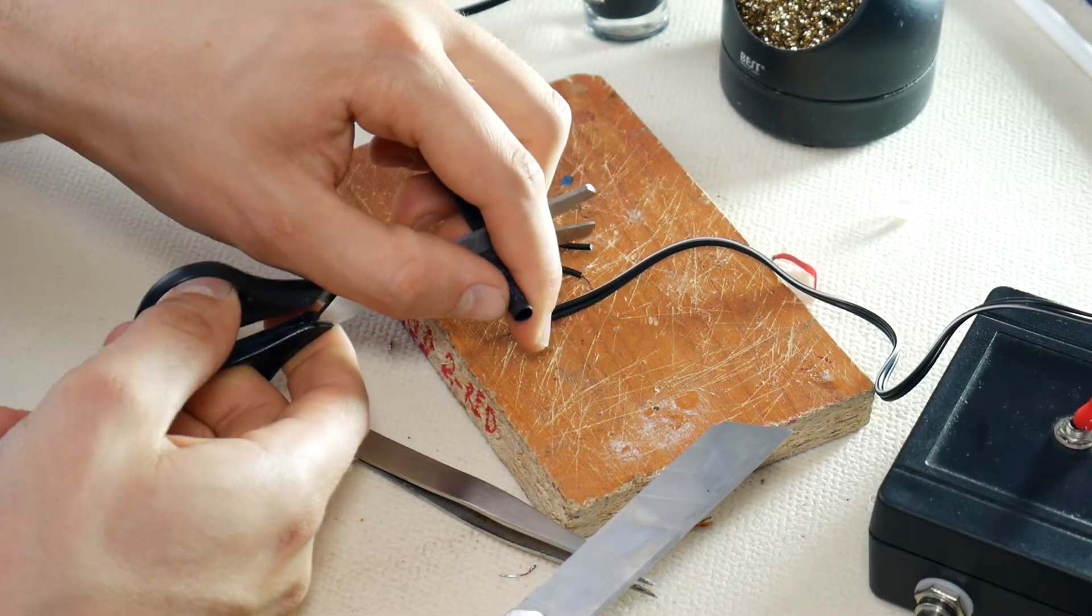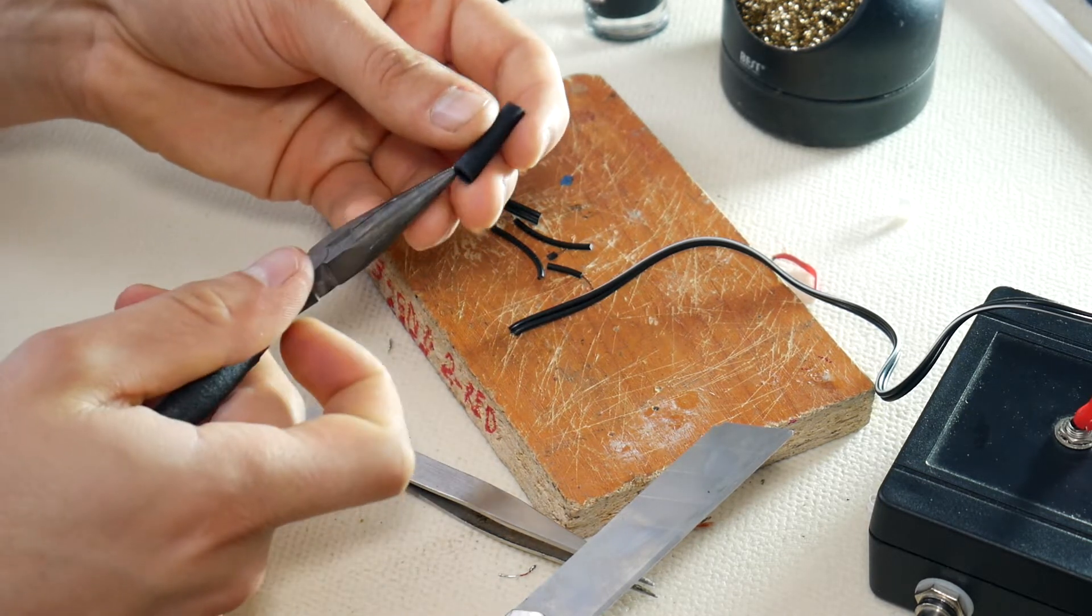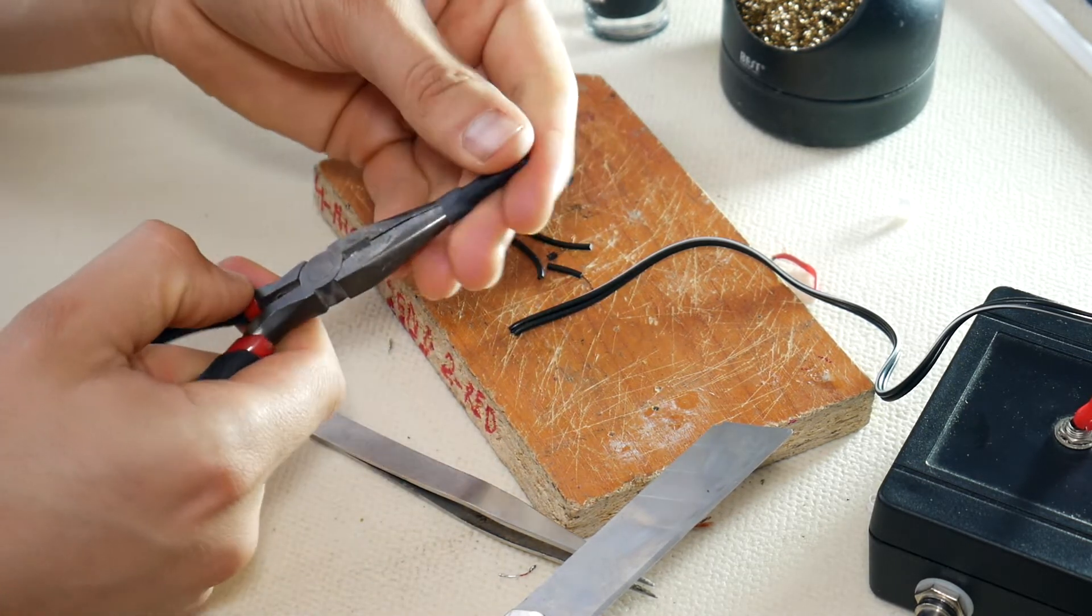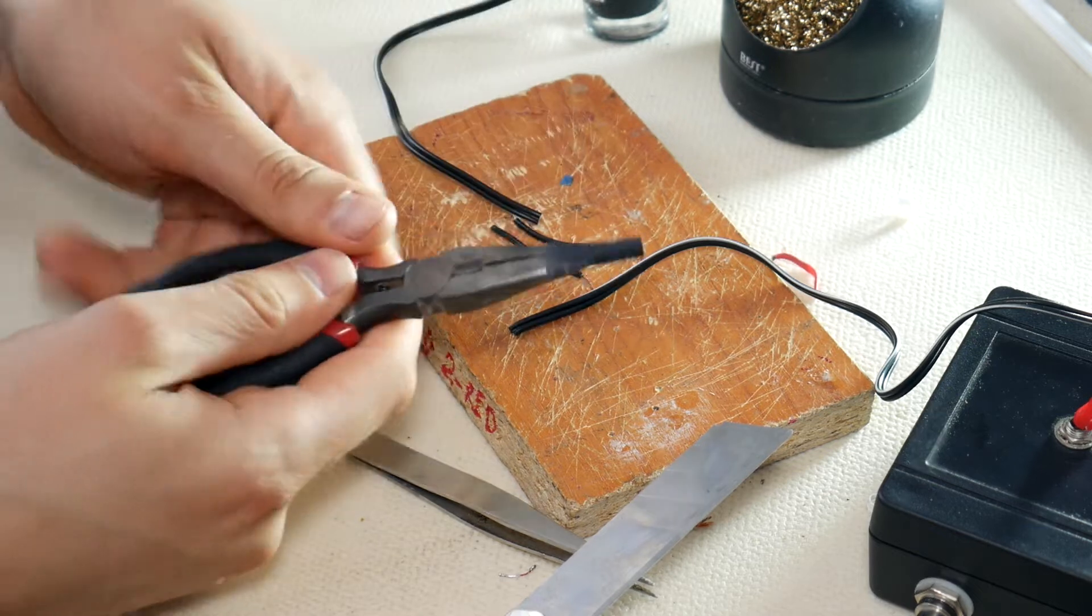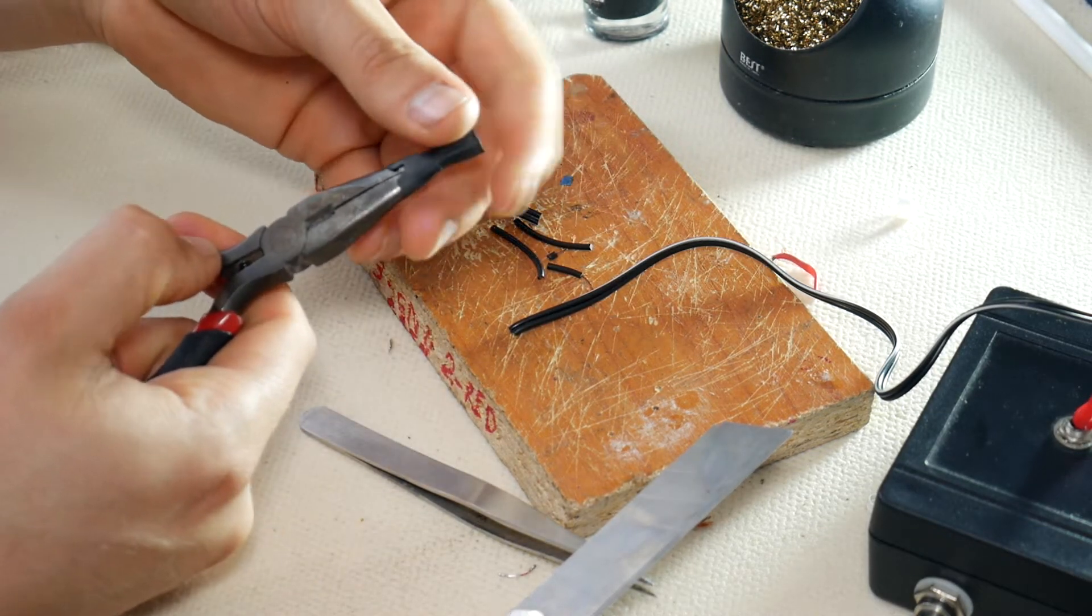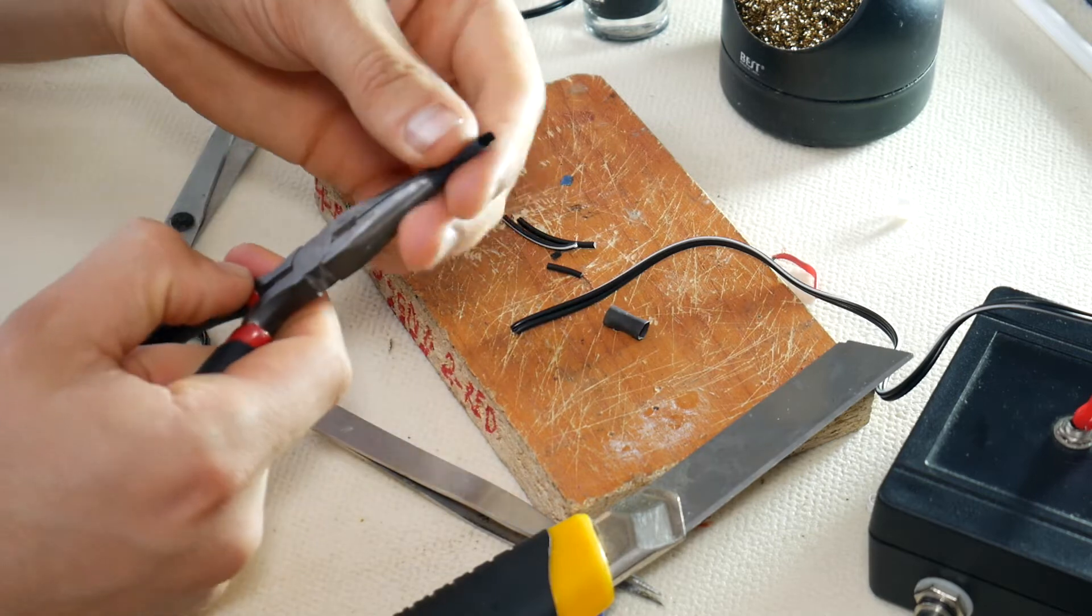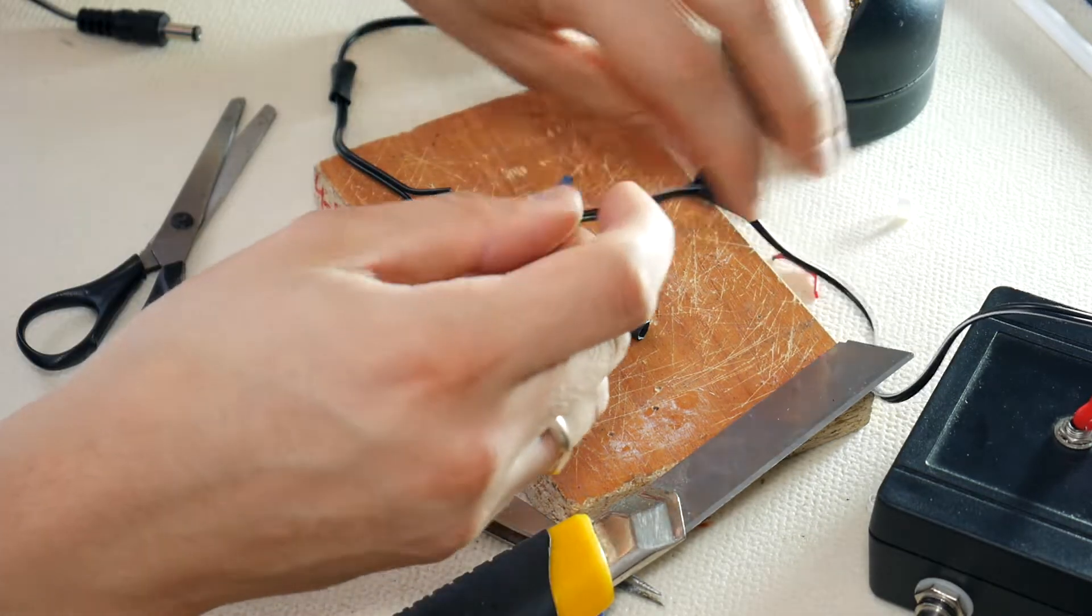Then we find heat shrink tubing whose diameter is a bit bigger than the wires, and stretch it a little larger because the connection will be larger in diameter than the wire itself. Place it on top of the wire, then prepare another heat shrink tube and put it on the other wire.